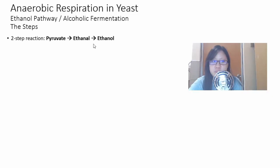Let's start with anaerobic respiration in yeast, which is using the ethanol pathway. The ethanol pathway is a two-step reaction. You are going to be converting pyruvate, which is the final product of glycolysis, to ethanal, and then from ethanal to ethanol. Can you remember that? Pyruvate, ethanal, ethanol. Two steps. This process is irreversible. It cannot be converted back.